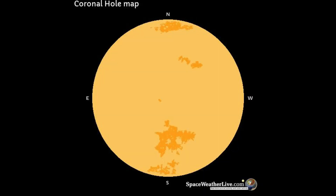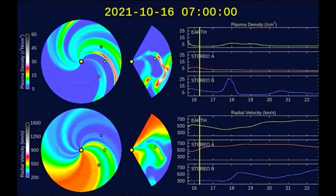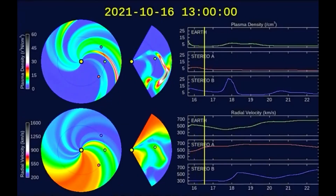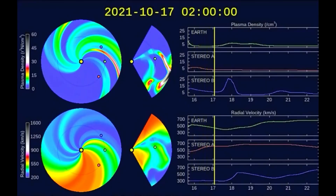This coronal hole map shows the coronal holes on the Earth-facing side of the Sun. Coronal holes are the source of fast solar wind streams, which sometimes have the potential to produce minor to moderate geomagnetic storms.